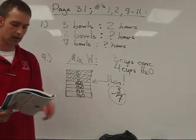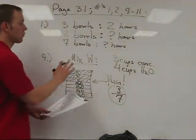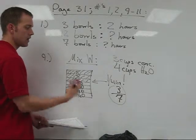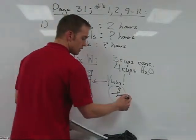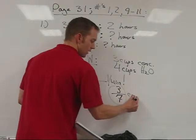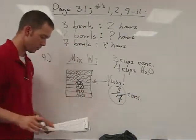So 9A, it says which fraction of each mixture is concentrate. Well, for mixed W, you could say three out of the seven cups are concentrate. And that will take care of mixed W for part A.